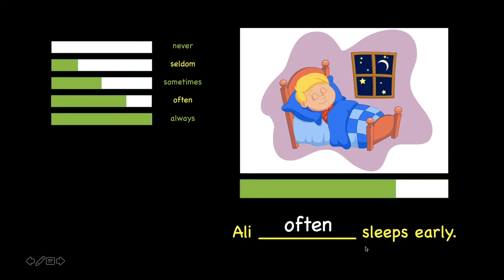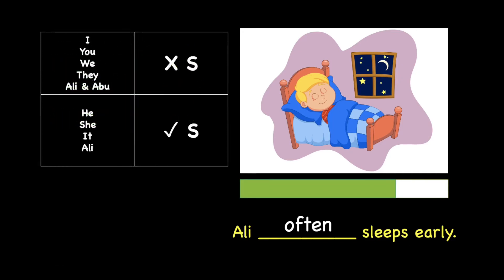Now, Mr. Pui is going to ask you a question. Why are we using the S here behind the sleep? Do you still remember the I, you, we, they table? Very good. Because I, you, we, they, Ali and Abu, these are plural subjects. They don't take S in the verb. But then he, she, it, Ali, these are singular subjects and they take S at the back of the verb. So we put an S behind sleep. Good job.